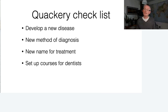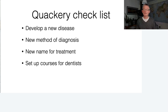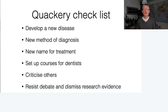The classic orthodontic quack will set up a two-day airport course for dentists and teach against conventional orthodontic wisdom. Dentists are targeted because they lack the orthodontic knowledge that specialists have, making them fairly easy pickings for this source of income. Quacks also criticise established orthodontists, resist debate, and dismiss research evidence — particularly stating that their type of treatment isn't amenable to research because it is special and unique.